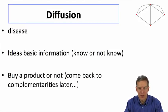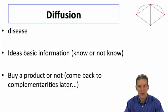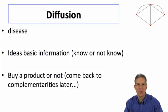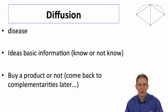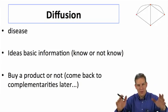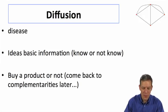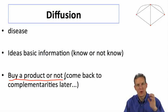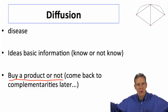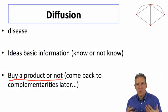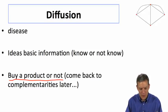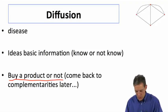For diffusion, we can think about things like the flu and basic disease diffusion. We can also think about ideas or basic information — something you either know or don't know — where you just have to be told about something, like a new iPhone. Some applications of this basic kind of diffusion involve people adopting a product, where all they need to do is know about the product to make their own decision without worrying about what other people are doing. Where whether I want to buy a product depends on others, that's more complicated — we'll come back to those complementarities later.